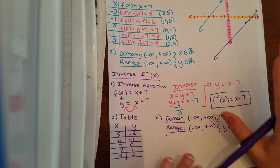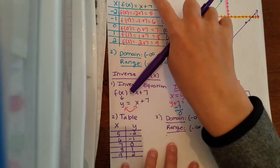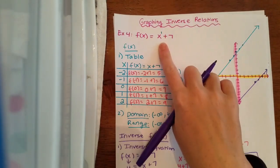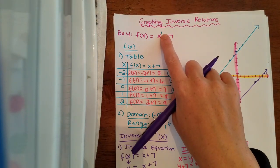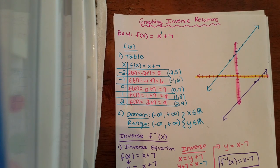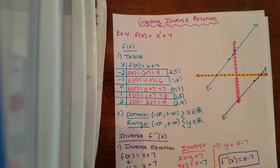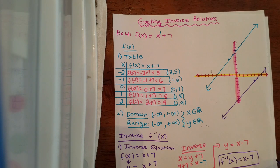We've graphed the inverse, found the inverse equation, and found the domain and range of the inverse. Now we're going to start example five, which is pretty much the same thing but with a quadratic — something to the second power instead of the first. If you want, go ahead and try the next problem on your own by pausing the video, or you can watch as I work through it.